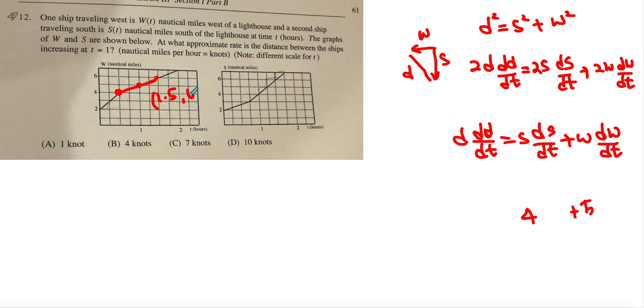Here we get 0.5 comma 4. So slope becomes 6 minus 4 over 1.5 minus 0.5 which becomes 2 over 1. So we realize that dw dt along that line would have been equal to 2.